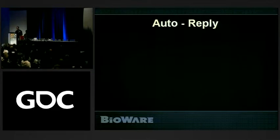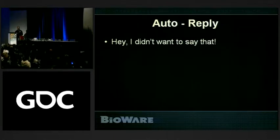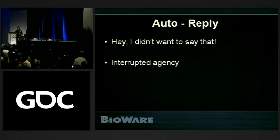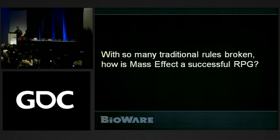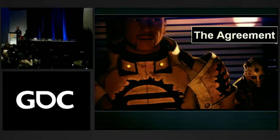What we saw is auto-reply — Shepard acted on his own without me telling him to do something. As a player, I'm thinking: what if I wanted to make another choice? My agency has just been interrupted. Was it lack of choice? Was it anti-role-playing design? And really, with so many traditional rules broken, why is Mass Effect such a successful RPG experience? It comes down to what we call the agreement — a set of rules that binds us to the player to make sure their role-playing experience is always in line with expectations.